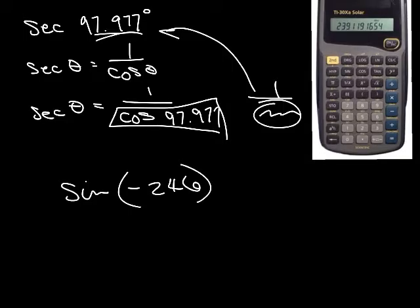Cotangent, same thing. If it gives you the sine of negative 2.46, you should just be able to plug that in your calculator because you do have a sine key. It is right there.